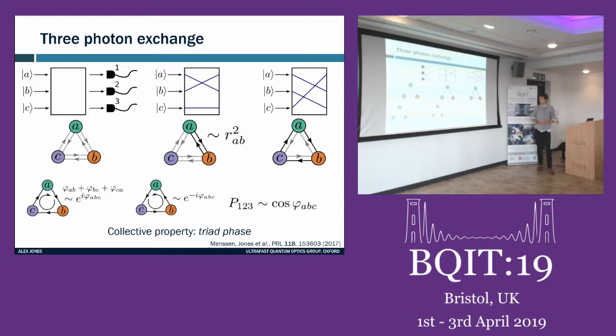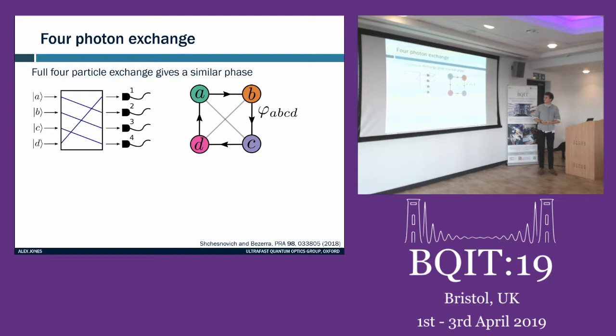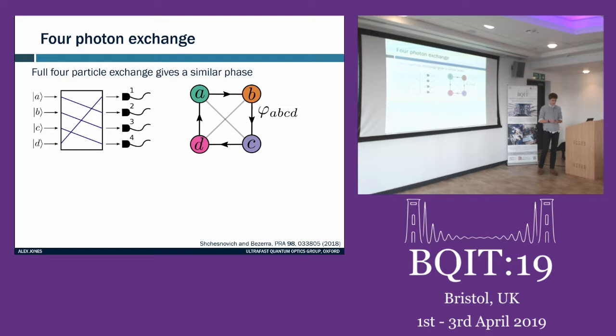What happens if we add another photon — four photons in states a, b, c, and d, all with some overlap? The fully connected graph now supports a four-edge loop corresponding to a four-particle exchange, and a four-particle phase shows up in the interference statistics. Since it's fully connected, this four-particle phase can be decomposed into the sum of triad phases.